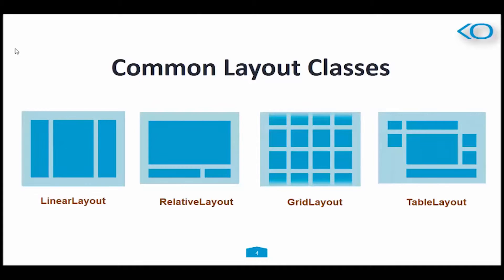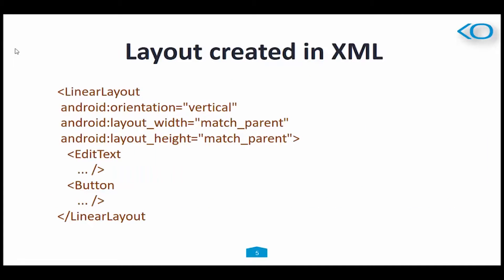Layouts can be created both in XML and in Java. In XML, you can create a layout in two ways: you can either drag and drop a linear layout, relative layout, or constraint layout from the design palette, or you can directly code into the XML file. For that you need to create a tag — for example, if you are creating a linear layout, you create a linear layout tag and add certain properties to it.